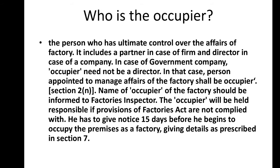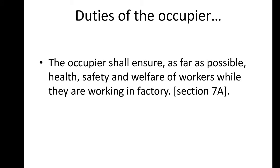Notice must be given 15 days before the occupier begins to occupy the premises as a factory. Before 15 days, details should be submitted to the inspector according to section 7 of the Factories Act. The duties of the occupier include taking care of the health, safety, and welfare of workers while they are working in the factory.